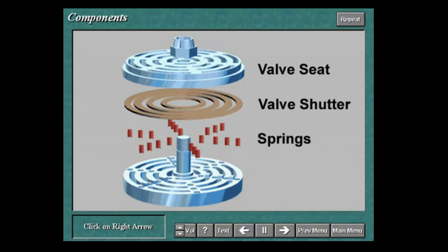The springs are the components that return the valve shutter onto the seat when the flow of gas has stopped. The valve stop, or guard, is the part against which the valve shutter stops. It determines the degree of lift that the shutter may have.